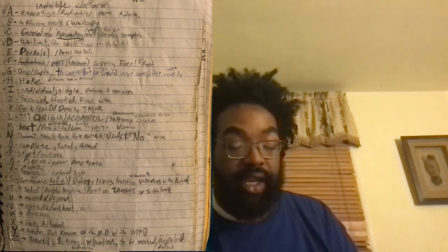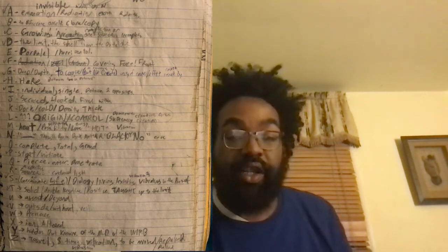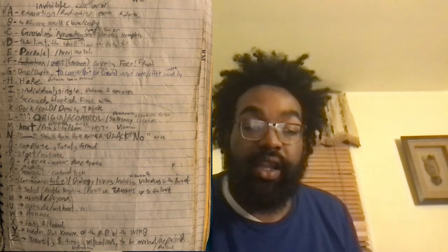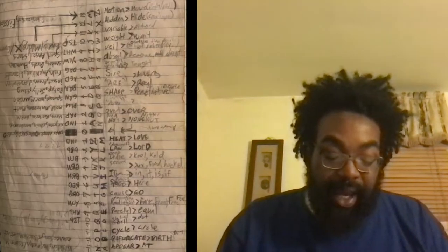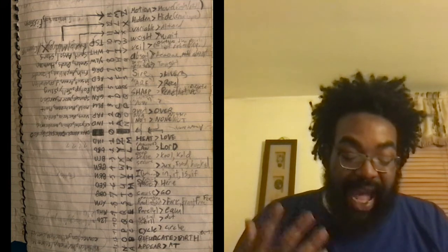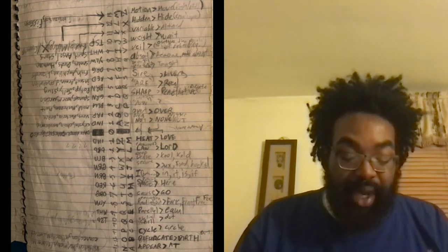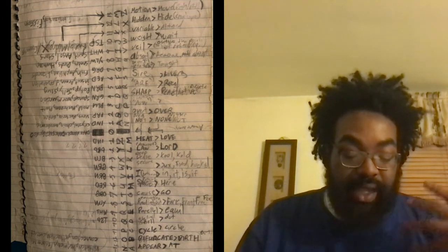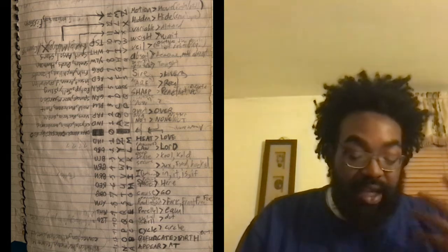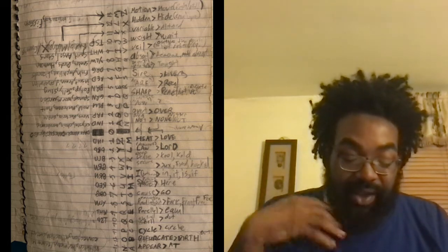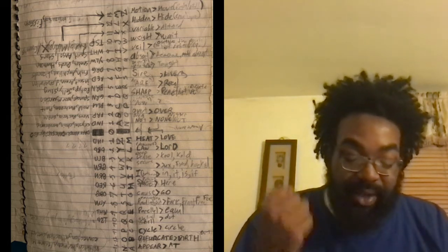So that's my first generation of notes. In my second generation notes, I line up A with appearance as an act, B with bifurcate as in birth, C with cycles as in circle, D with the shell as a dot — the surface of the sphere — E parallel as in equal.